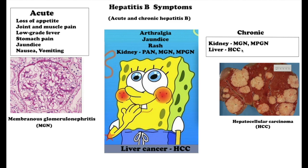When symptoms of chronic hepatitis B do appear, they resemble those of acute infection but can signal advanced liver disease. Chronic HBV infection can lead to serious complications such as cirrhosis, which may impair liver function; liver cancer, most commonly hepatocellular carcinoma; and liver failure. People with chronic hepatitis B may also develop kidney disease, including polyarteritis nodosa and membranous or membranoproliferative glomerulonephritis.